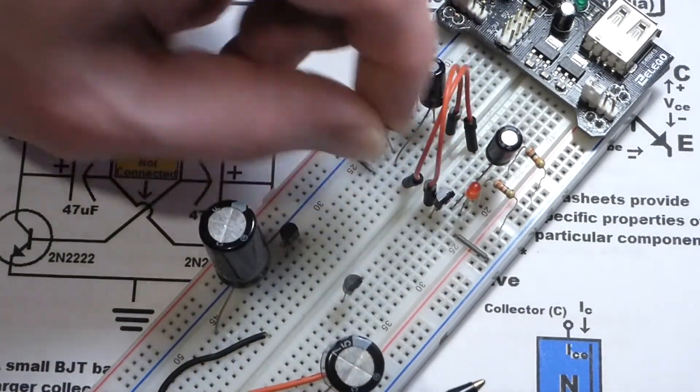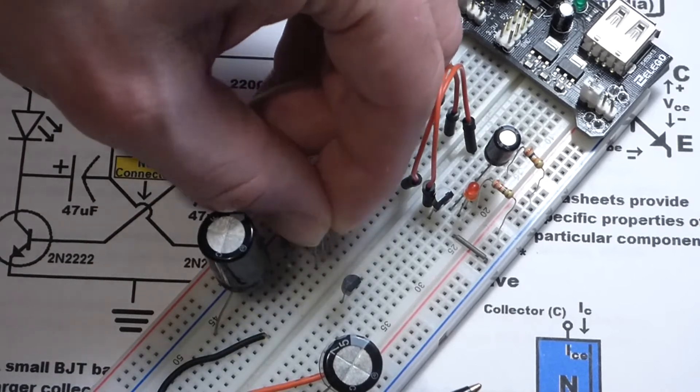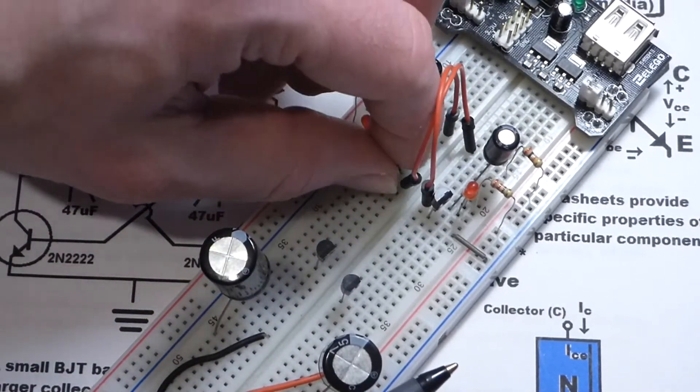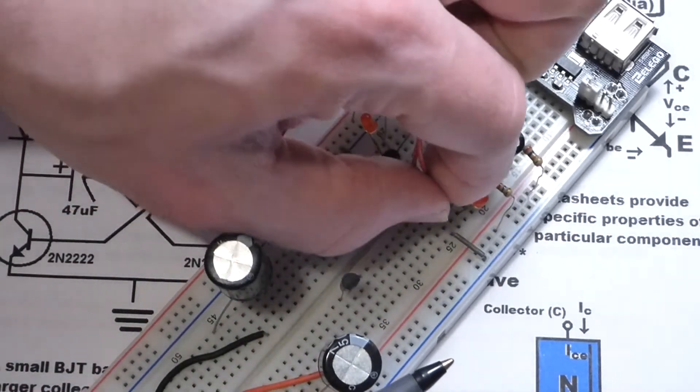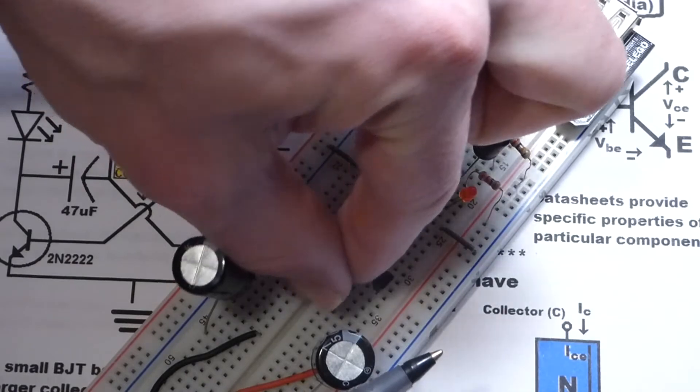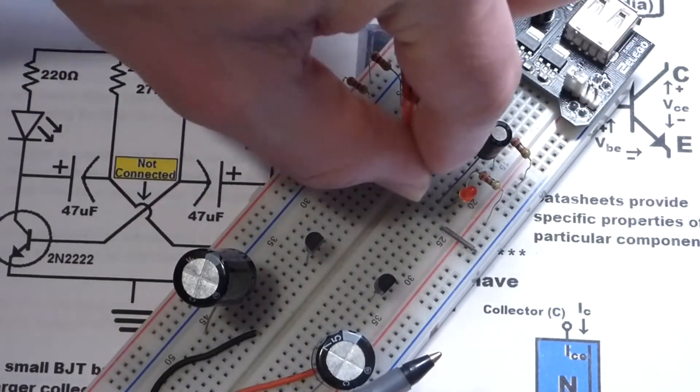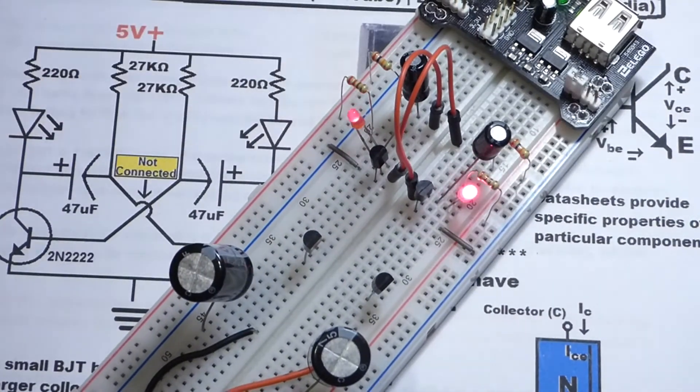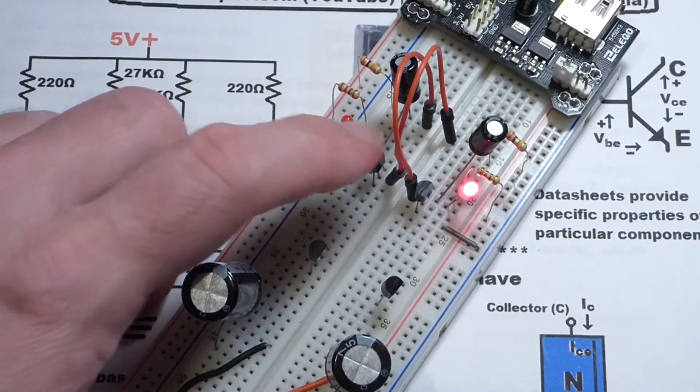And what we should find, this is the 2N2222. Set it down there for a little bit. This is the 2N3904. So, it's different marking and stuff, but it's still an NPN transistor. And in this circuit, we should see that it makes no difference. It behaves the same.